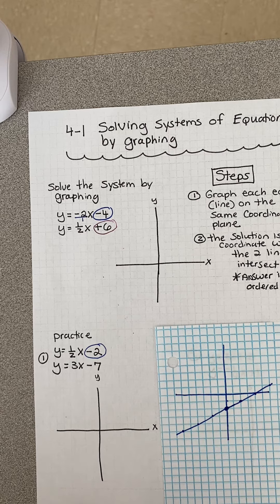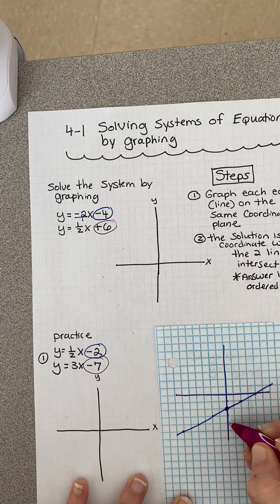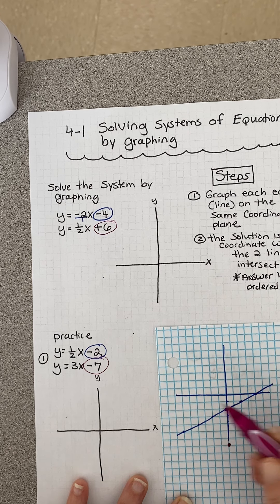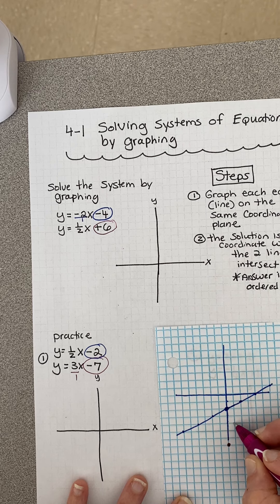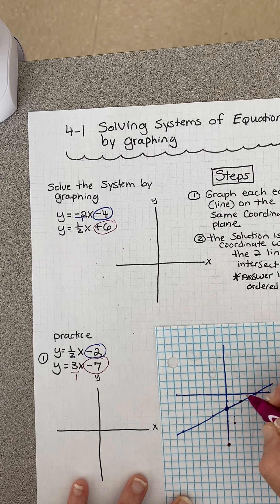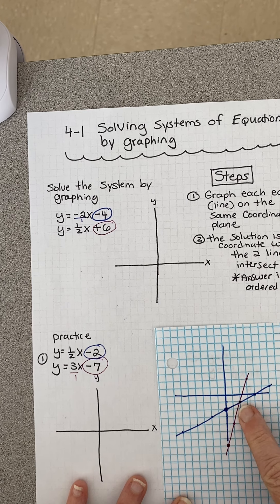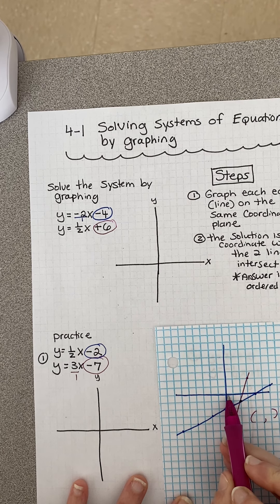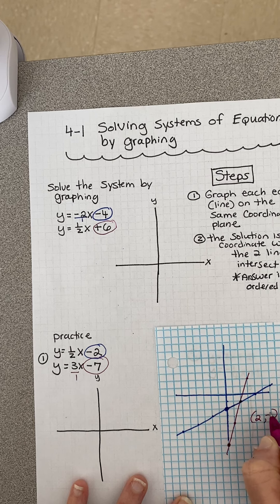Now let's graph the other one. My y-intercept is negative 7, down here. My slope is 3 over 1, so I rise 3, run 1. Rise 3, run 1. The part I care about is where they intersect. So my solution is 2, negative 1.